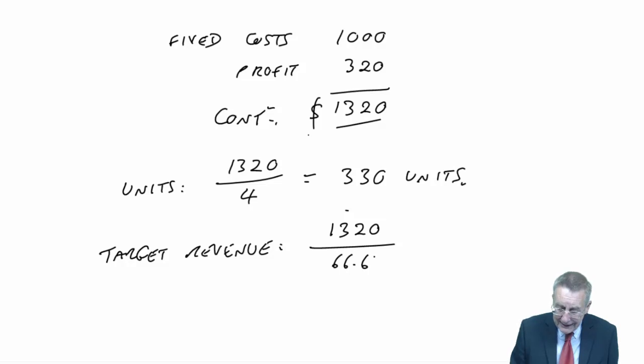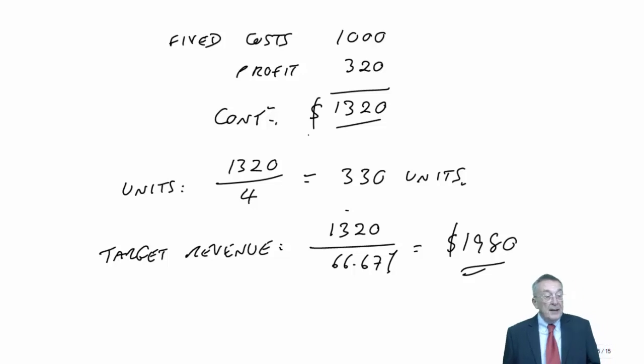We need $1,320 contribution, the profit required plus the fixed costs. We know the contribution is always going to be 66.67% of the revenue, so divide by the CS ratio and the revenue is $1,980. Not really anything new there. If you're happy with what we did before on break-even, where you're aiming for a profit of zero, contribution must equal fixed costs, then having a target like that should present no difficulty.